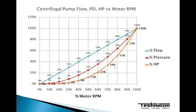Now how does that work in a practical application? This is telling us what the percentages would be. The blue line shows we have a linear rate of flow from 0 to 100%. Our red line indicates the squared function of pressure produced at the various RPMs on the X axis, expressed in percentages. And the motor horsepower is shown as a percentage of the full load. So at a 10% reduction from 100% RPM or flow, the horsepower required in that system would be 73% of the maximum horsepower.